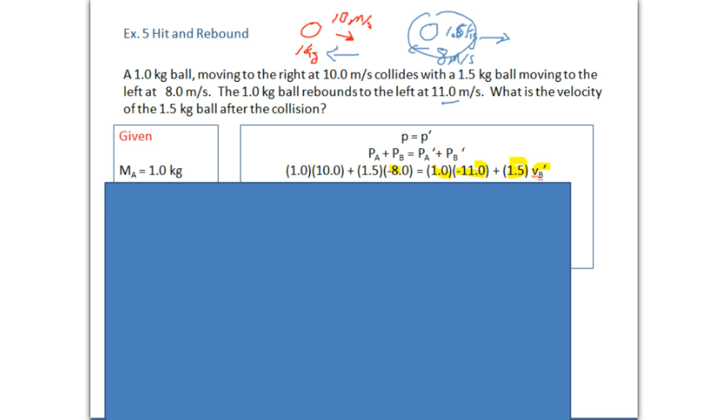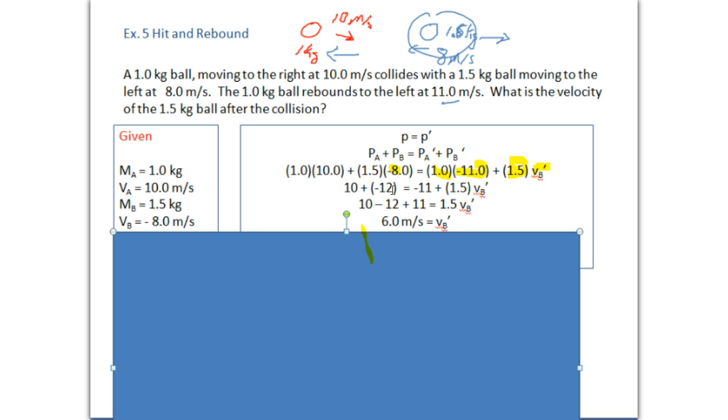So again, carry all your calculations. So 10 plus negative 12. Negative 11 on this side of 1.5. Bring your 11 over. 10, take away 12. Leaves you with negative 2. Plus 11. And then divide that by 1.5. You should end up with 6 meters per second. It's a positive answer. So it means that this ball B is going to move to the right.